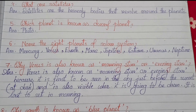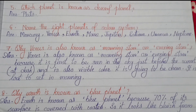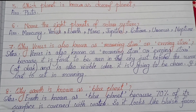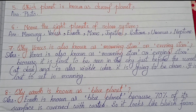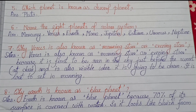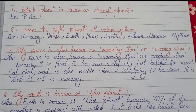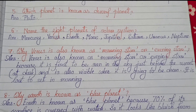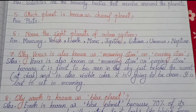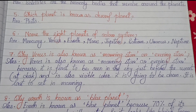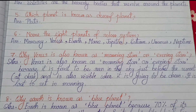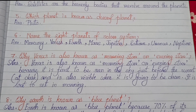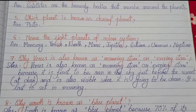Number five: Which planet is known as a dwarf planet? Pluto. Number six: Name the eight planets of the solar system — Mercury, Venus, Earth, Mars, Jupiter, Saturn, Uranus, Neptune. Number seven: Why is Venus also known as the morning star or evening star? Venus is known as the morning star or evening star because it is the first to be seen in the sky just before sunset, at dusk.